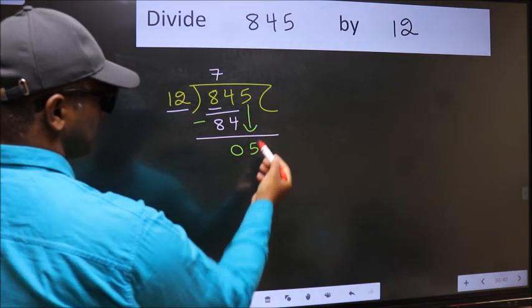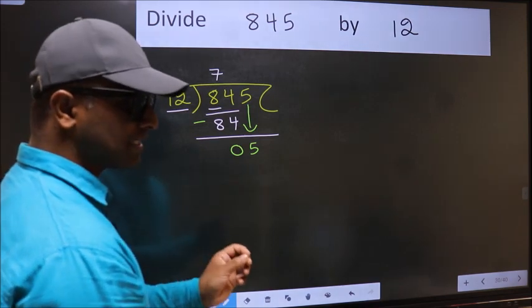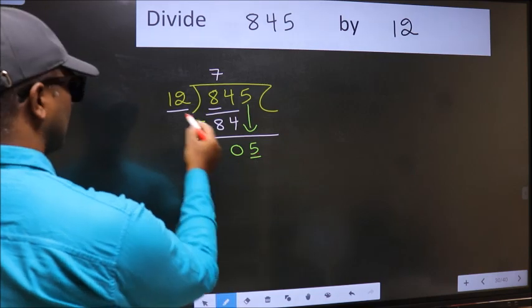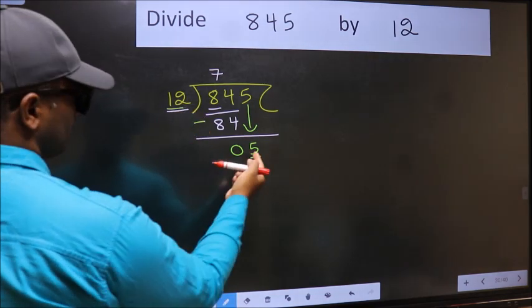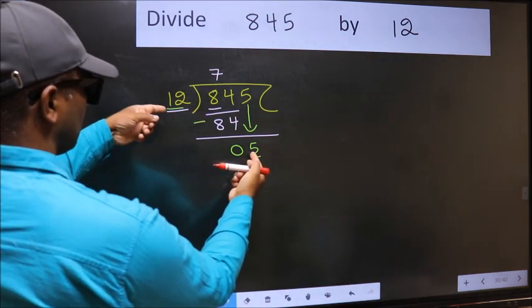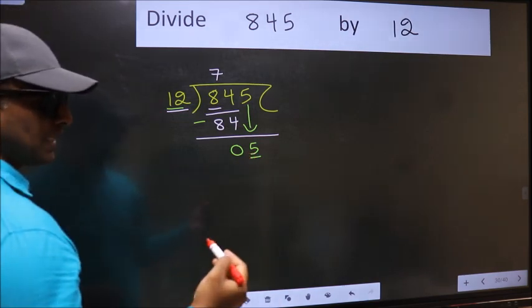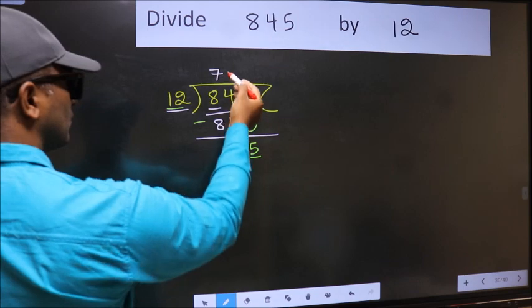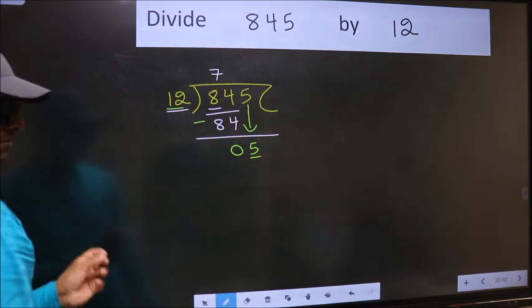After this step the mistake happens. And the mistake is this: here we have 5 and here 12. 5 is smaller than 12. So what many do is they directly put dot and take 0, which is wrong.